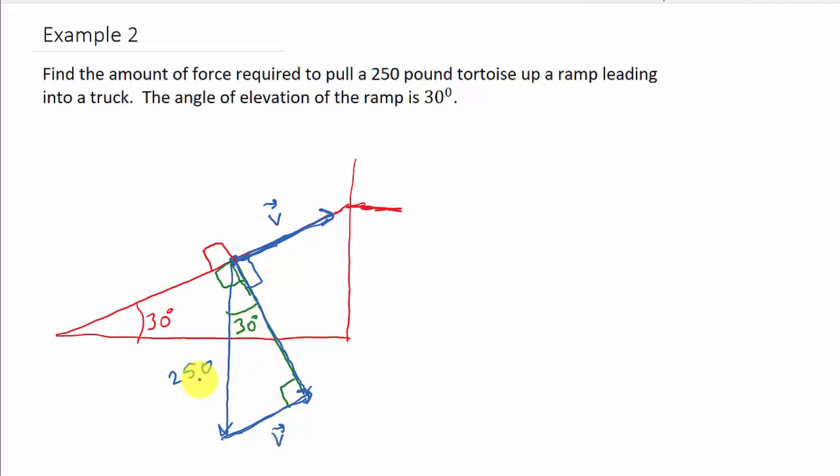So look at this. Opposite hypotenuse. Well, what is that? That's the sine of 30 degrees is equal to opposite. We're looking for the magnitude of V over the hypotenuse, which is 250.